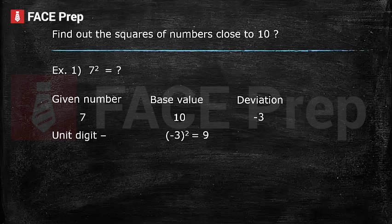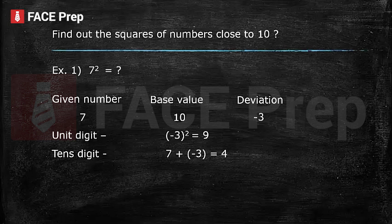Step 4: finding the unit digit. For the unit digit, calculate the square of the deviation. Here the deviation is minus 3; the square of minus 3 is 9, so the unit digit is 9. Step 5: finding the tens digit. The tens digit is the addition of the given number and the deviation: 7 plus minus 3 gives us 4. The final answer is 49.